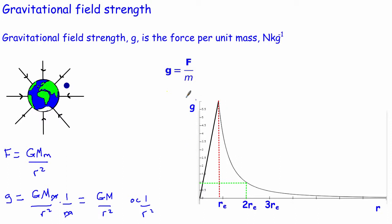Interestingly, you can work out what the gravitational field strength is inside a planet. It actually goes from 0 right at the centre, which makes sense — because if you're at the centre, all the mass around you is attracting you in all directions, so they cancel out. It goes in a nice straight line up to the surface, and that's when it starts to drop off with the 1/r² characteristic curve. To find the gravitational field strength at a certain distance from a planet, you simply use this equation.